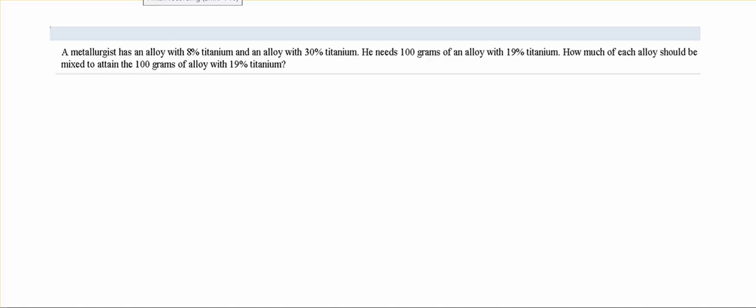Okay, with this particular problem here we have a mixture problem. So we have two different types of alloys, one with 8% titanium and one with 30% titanium. We want to add those together to make 100 grams of an alloy of 19% titanium. So I find it useful to use buckets on this one.